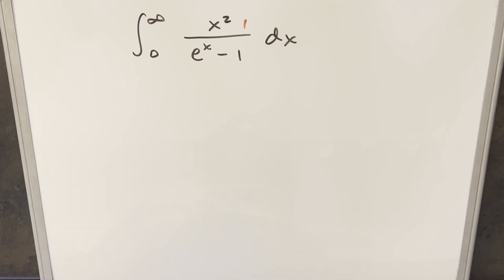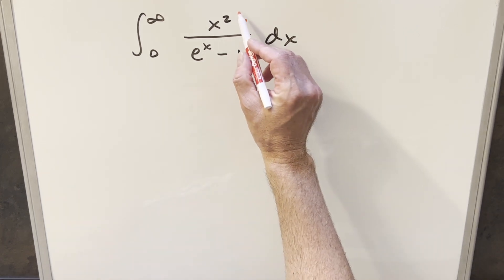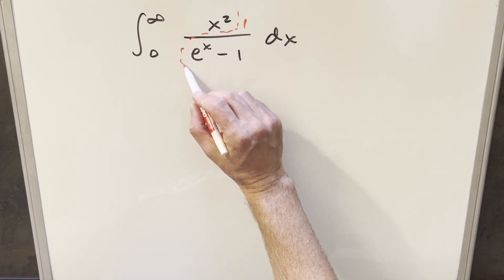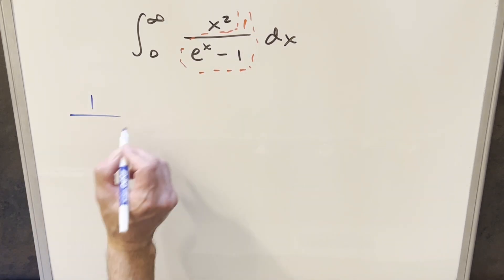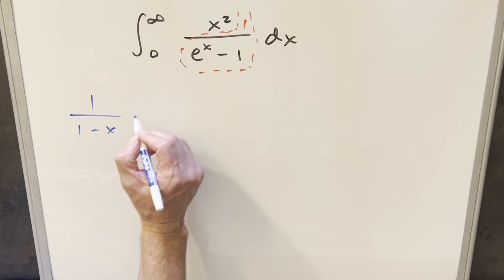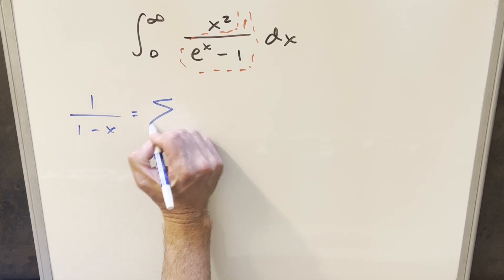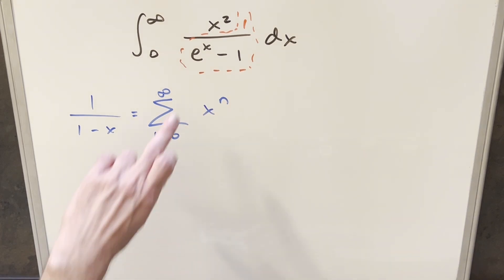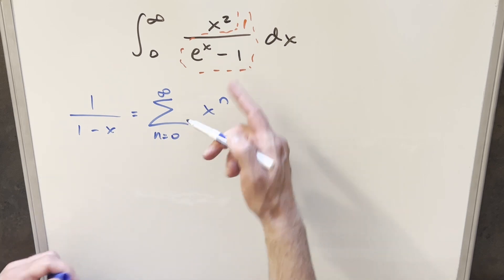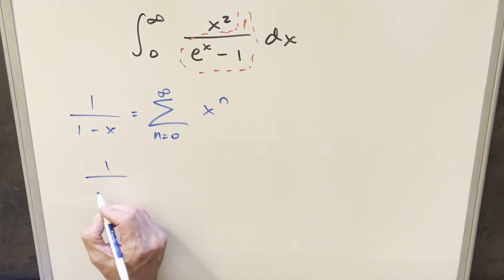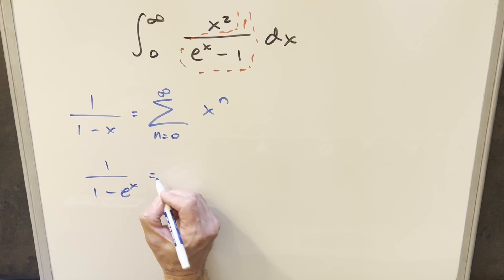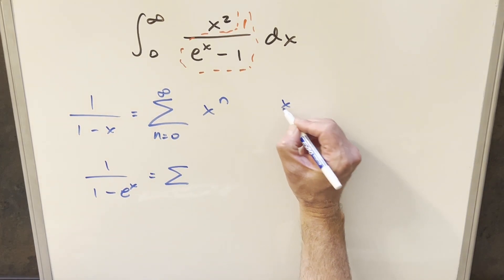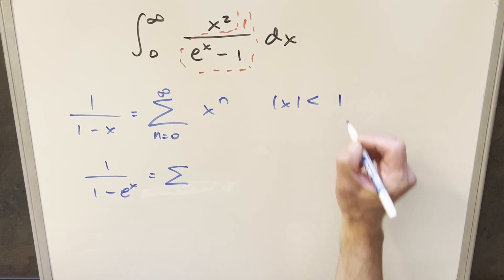What I wanted to do instead was notice the similarity here to something like the geometric series. For our geometric series formula, we have 1 over 1 minus x is going to be the same thing as the sum from n equals 0 to infinity of x to the n. So if I took this and multiplied it by minus 1, brought a minus out front, then this whole thing we could write as something like 1 over 1 minus e to the x and then plug it in over here. The trouble is we have this condition that we need the absolute value of x to be less than 1.